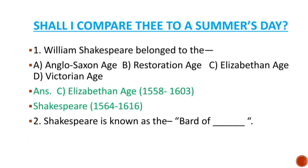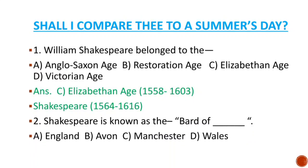MCQ number 2: Shakespeare is known as the Bard of — options are England, Avon, Manchester, Wales. We know that Shakespeare is known as the Bard of Avon. Hence the right answer is option B.